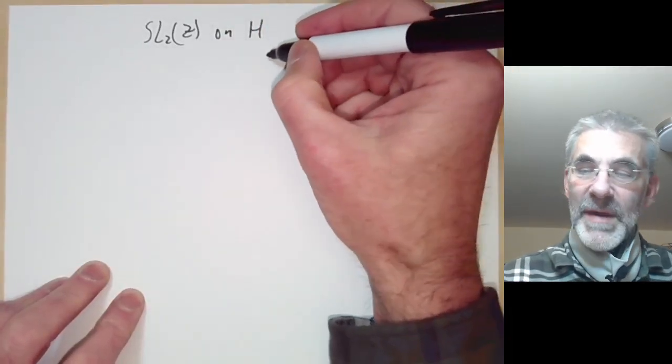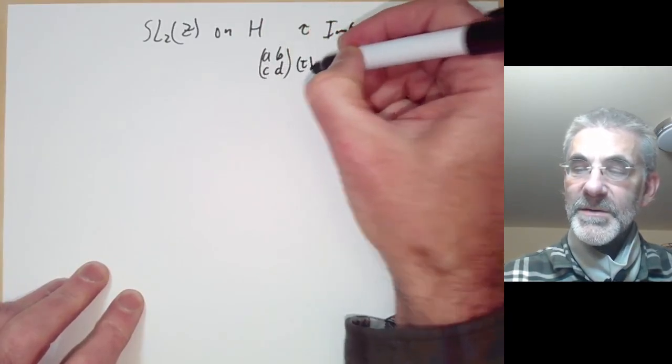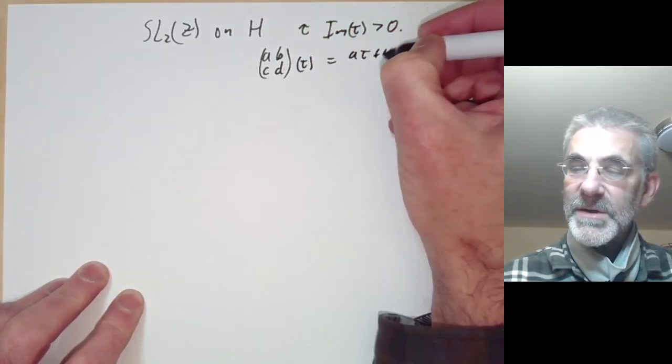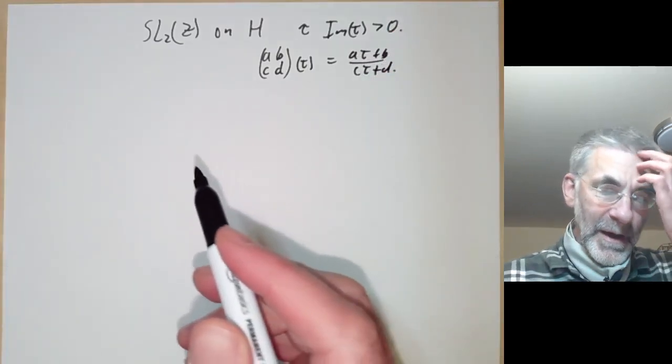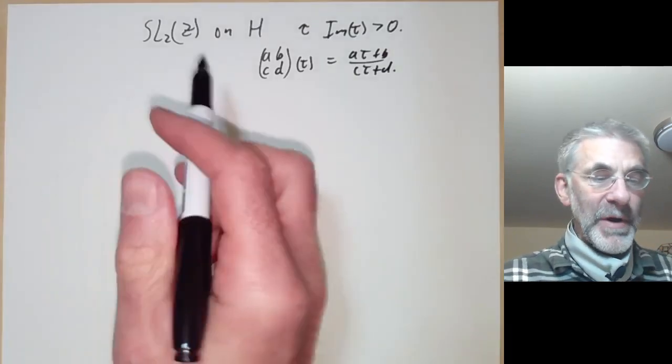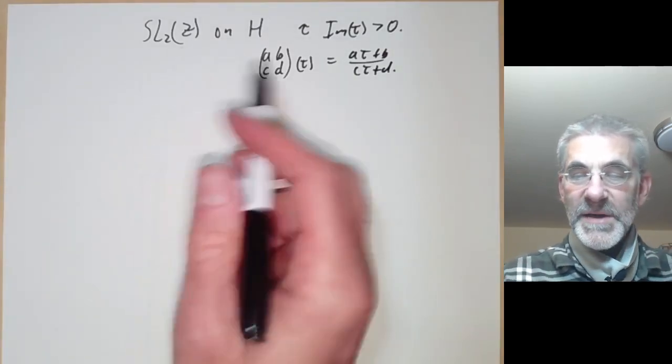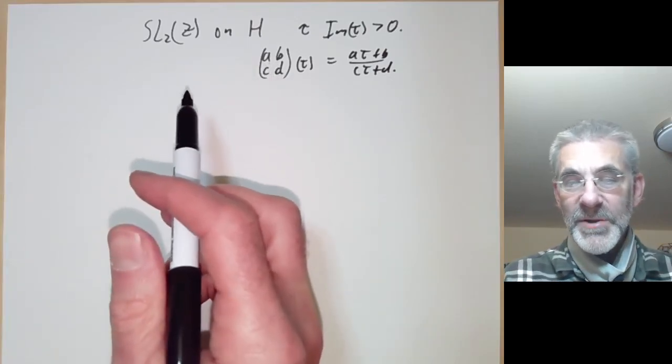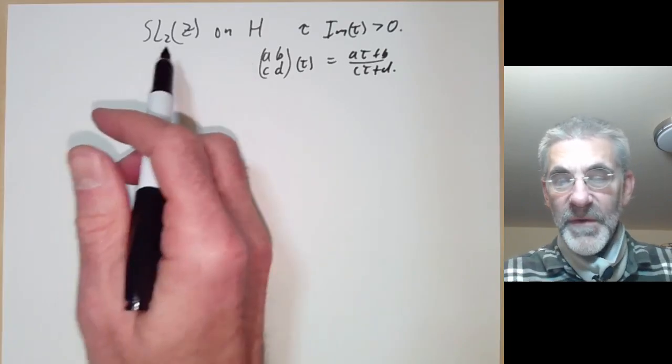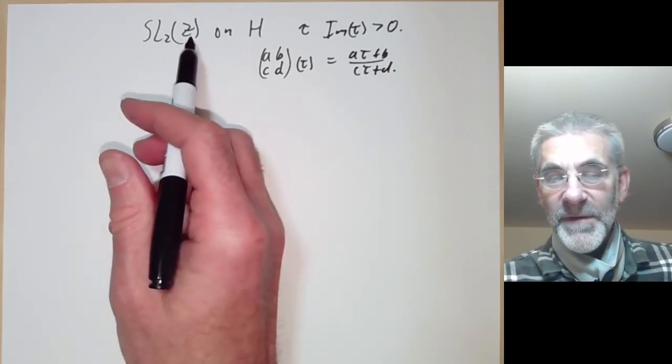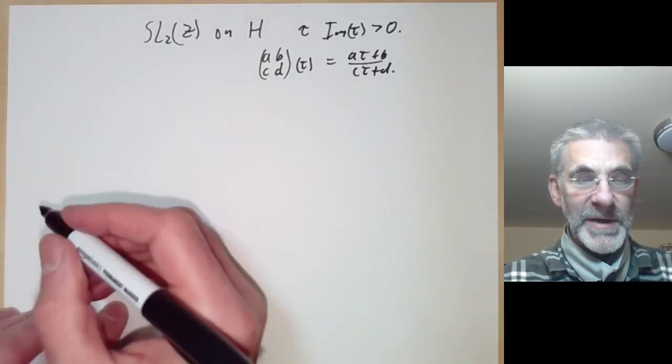And you remember the action is given by (a,b,c,d) acts on tau as (a*tau + b)/(c*tau + d). And last lecture we were looking at modular forms and mentioned we wanted to prove that spaces of modular forms are finite dimensional, which we'll do next lecture. But for that proof we need some results about the geometry of SL2Z and its fundamental domain on H, which I'm going to give this lecture.